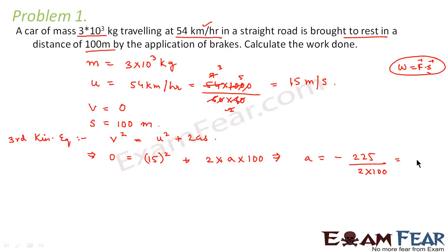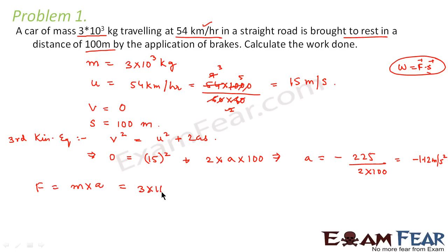So acceleration A = −1.12 m/s². The negative sign shows the vehicle is retarding, which is obvious since speed decreased from 15 m/s to 0. Now we calculate force: F = mass × acceleration = 3×10³ × 1.12 = 3.36×10³ N.